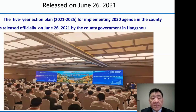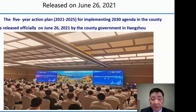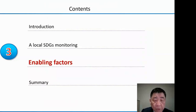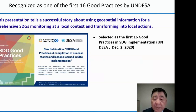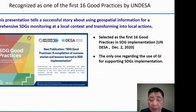This five-year action plan was officially released on June 21st by the county government — possibly the first county-level action plan of its kind in the world. In December 2020, the United Nations DESA published a booklet selecting the first 16 good practices in SDG implementation, and our work was one of them. It is also the only one regarding the use of geospatial information for supporting SDG implementation.